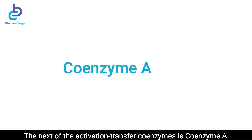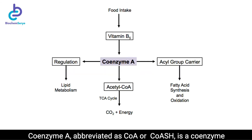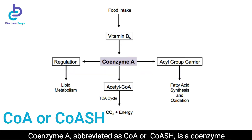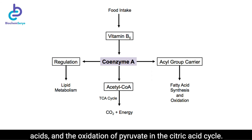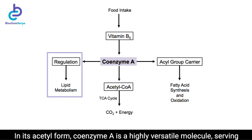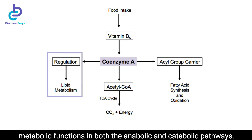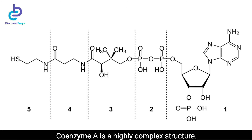The next of the activation transfer coenzymes is coenzyme A. Coenzyme A, abbreviated as CoA or CoASH, is a coenzyme known for its role in the synthesis and oxidation of fatty acids and the oxidation of pyruvate in the citric acid cycle. In its acetyl form, coenzyme A is a highly versatile molecule, serving metabolic functions in both the anabolic and catabolic pathways. Coenzyme A is a highly complex structure.